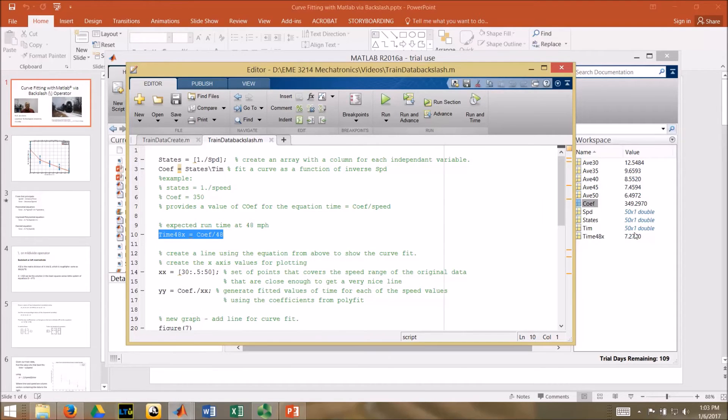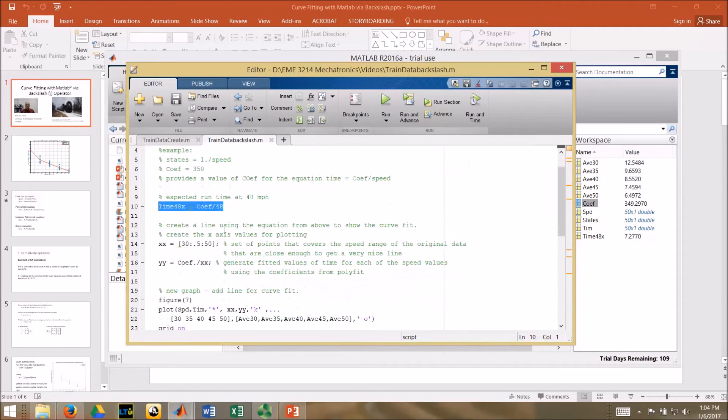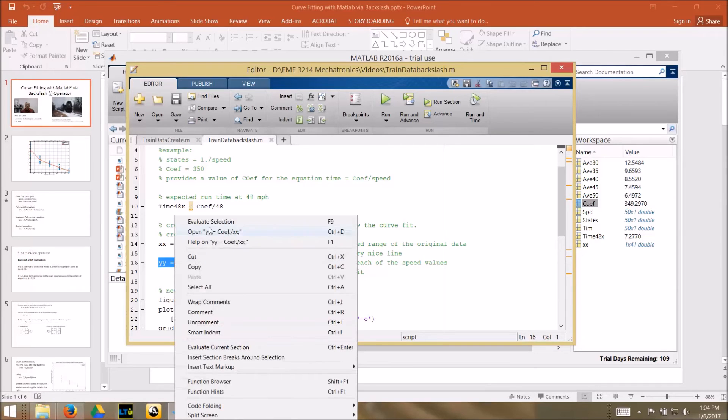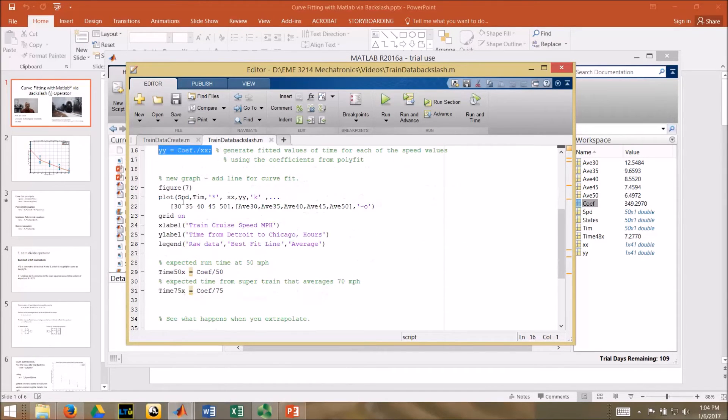If we had a train with a top speed of 48 miles an hour, I just divide that coefficient by 48 and I get time of 7.27 hours. Like I did before, I'm going to create a line set of values for the x values running from 30 to 50, just so I get a bunch of points for plotting.